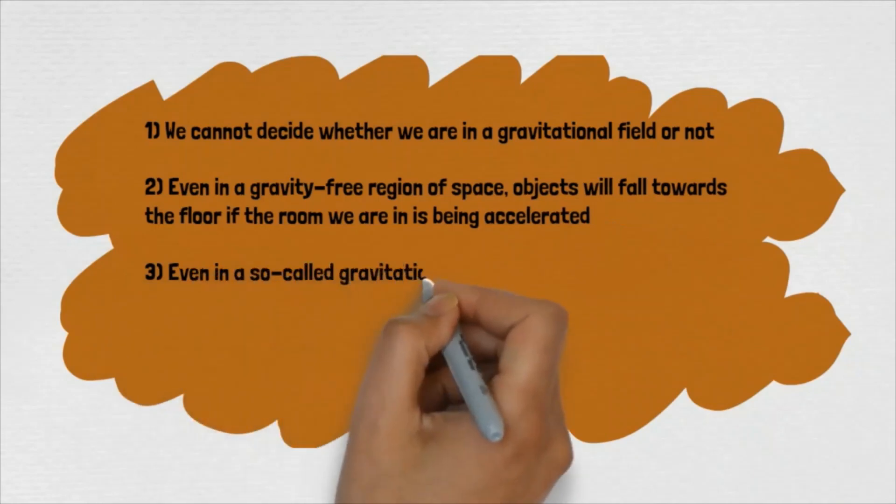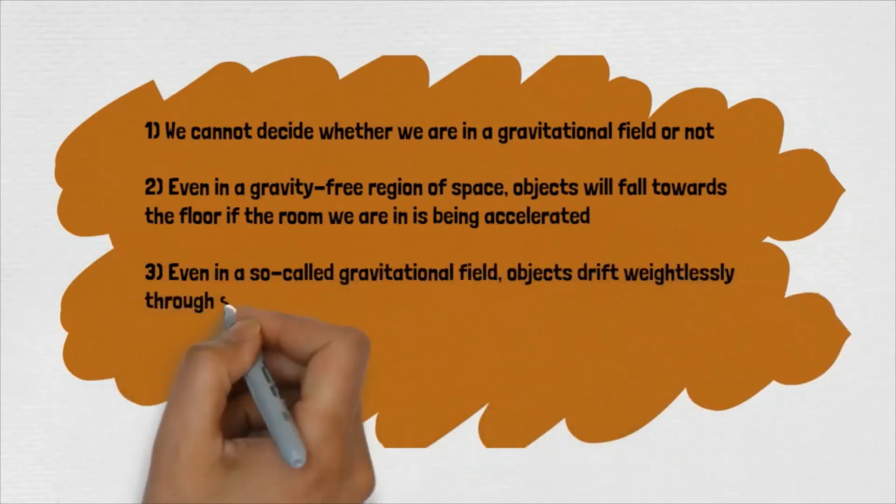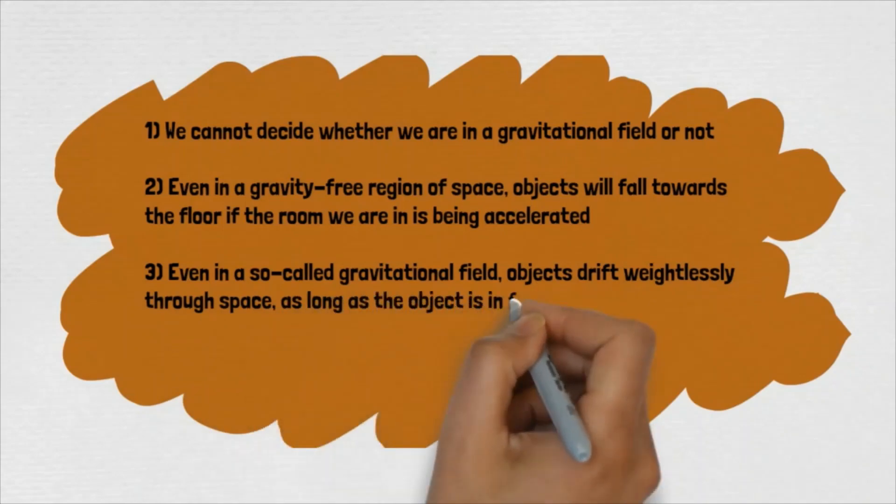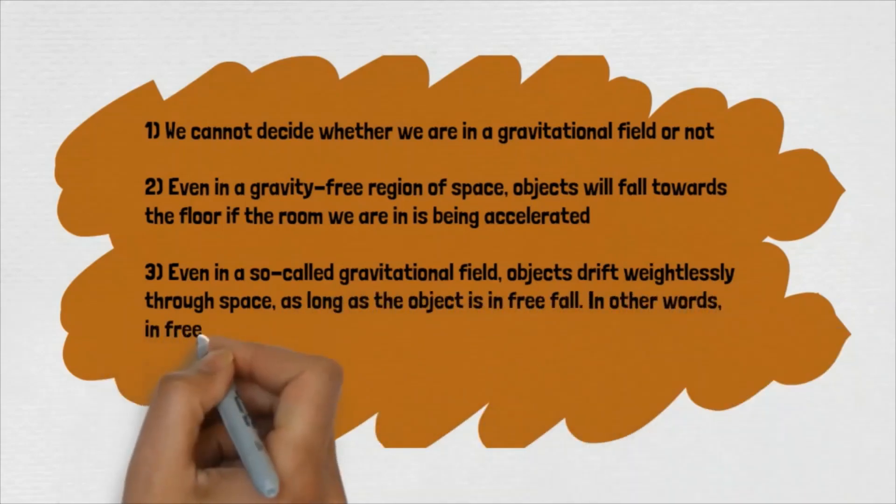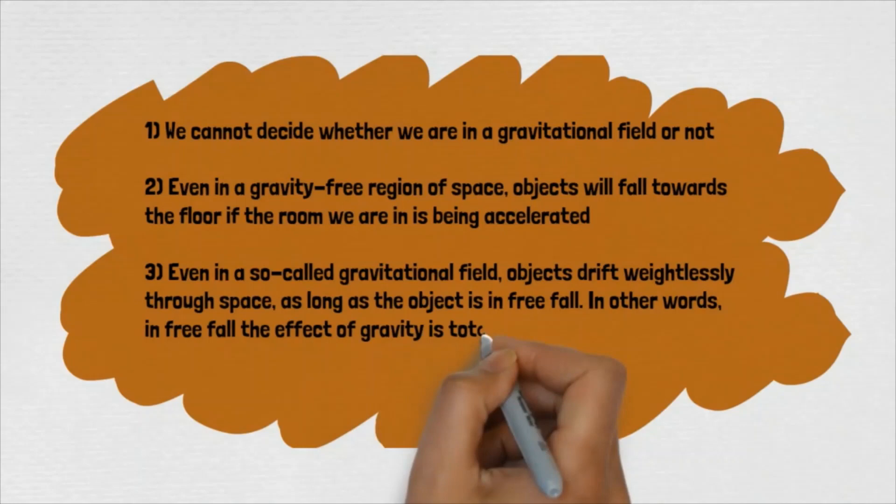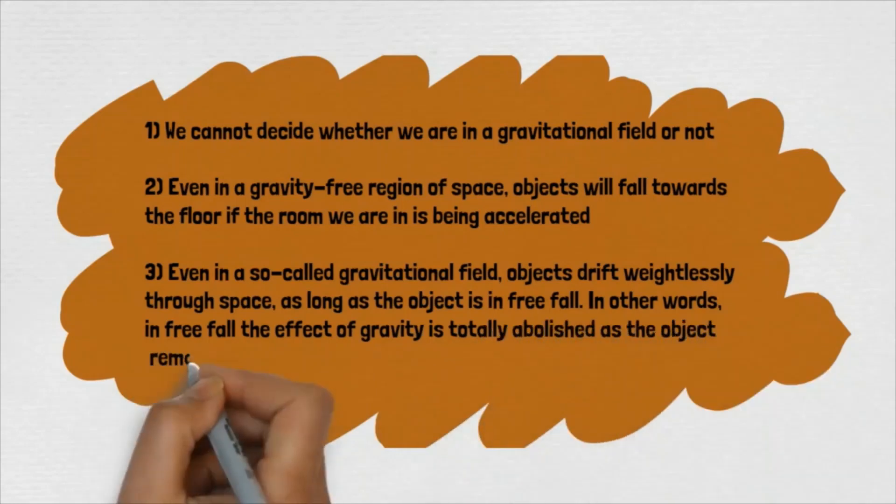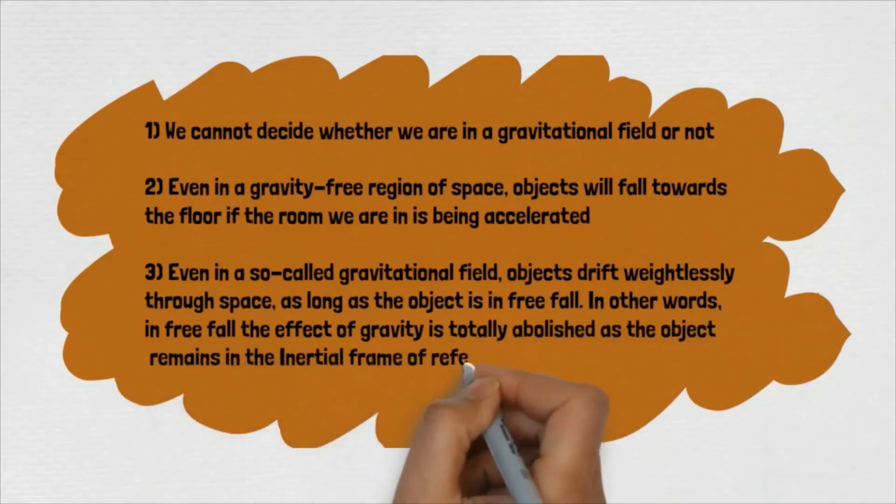Third, even in a so-called gravitational field, objects drift weightlessly through space as long as the object is in free fall. In other words, in free fall, the effect of gravity is totally abolished, as the object remains in the inertial frame of reference till it hits the ground.